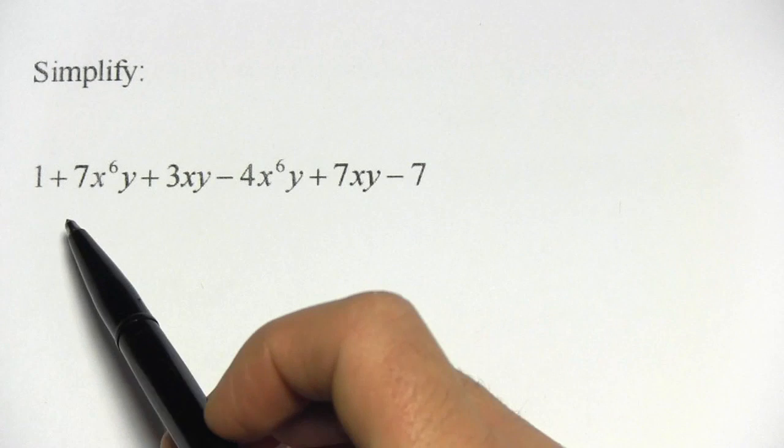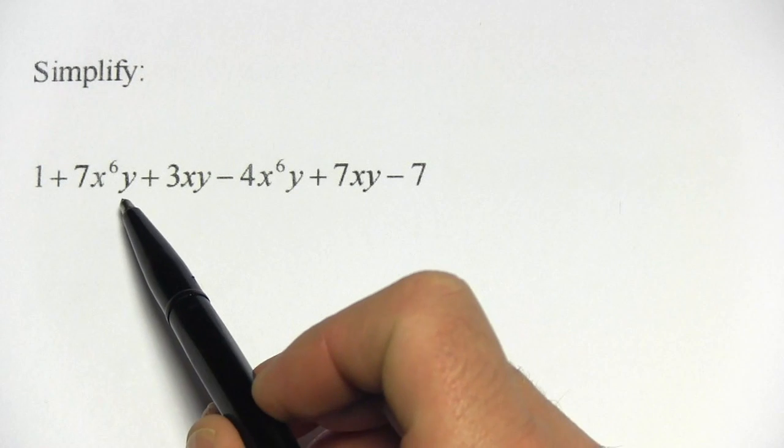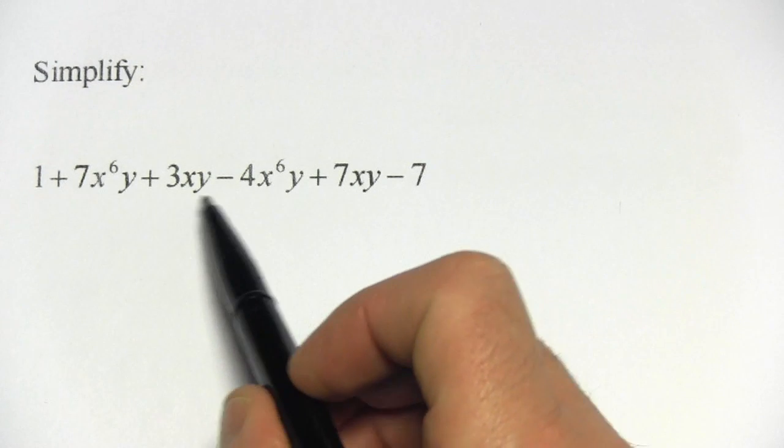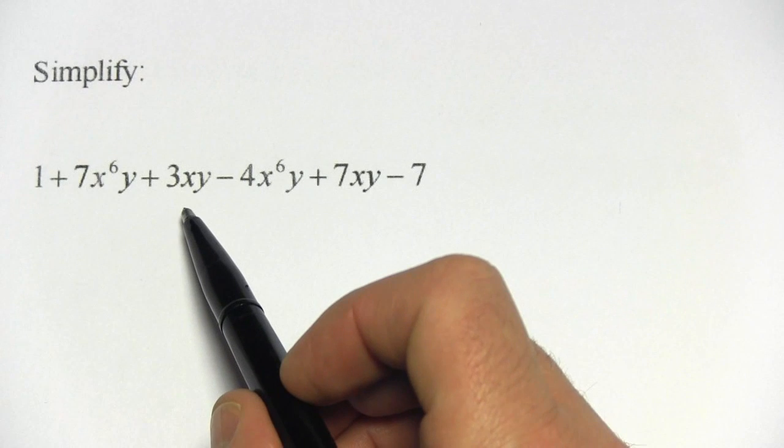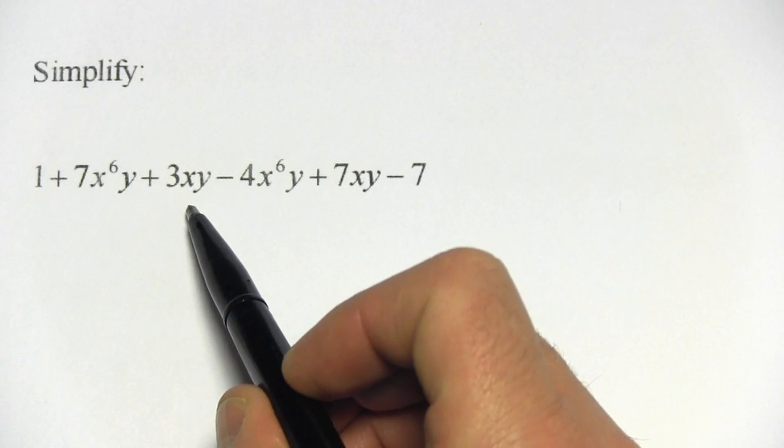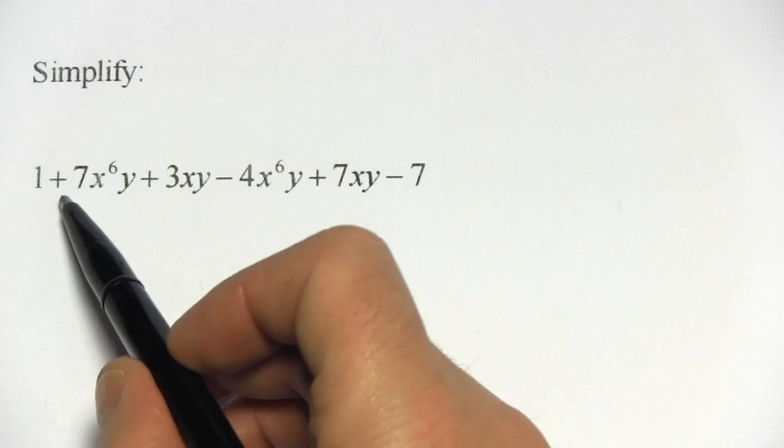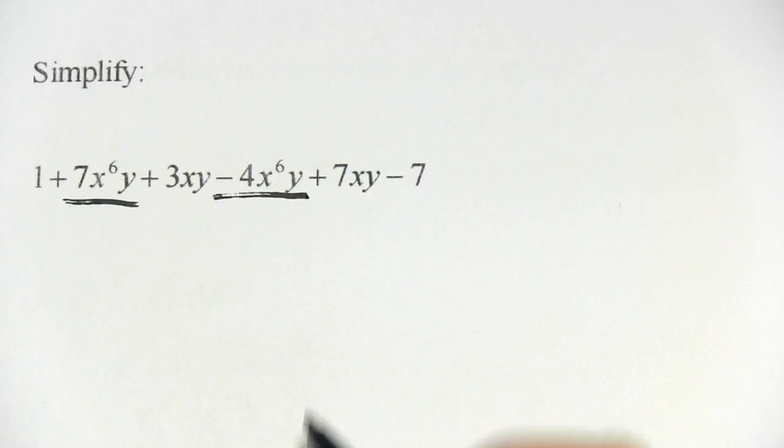So if you look at this first one, here's a term 7x to the sixth y. It is not a like term with 3xy because the x is not to the sixth power here. It is a like term with this one, so those two are like terms.